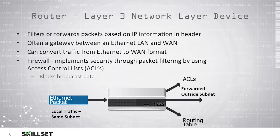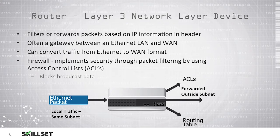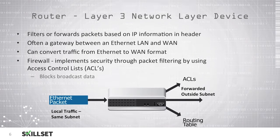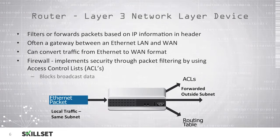If data is being transmitted to the same subnet or segment of the network, this is considered local traffic and will not be forwarded through the router. If data is intended to leave the local network, it will move to the router where the access control list will be checked, and if rules permit, the data will be forwarded outside of the subnet based on a routing table, which is used to keep information about how to forward data.